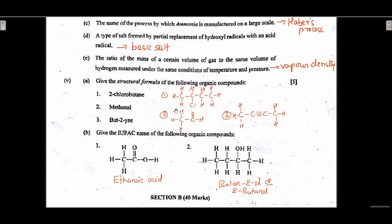Give structural formulas of the following organic compounds. 2-chlorobutane: four carbons with chlorine at position 2 — all single bonds. Methanal: aldehyde, so meth means one carbon — CH2=O (CHO), structural formula shown. But-2-yne: four carbons with a triple bond at position 2.